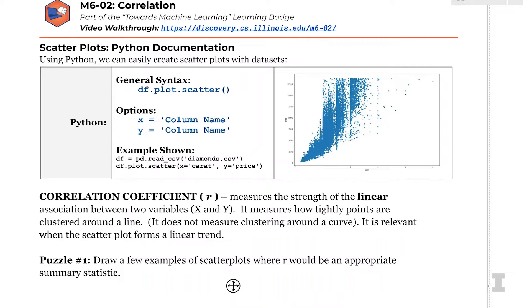The syntax is basically just df.plot.scatter. We want our options to be whatever our x variable is and our y variable is. We can see this example to the right, it looks like this is the diamond data set. Wade, do you want to tell us a little bit about that, your favorite data set?